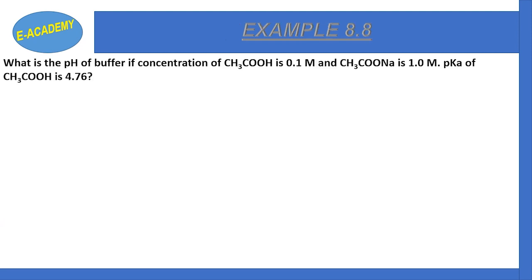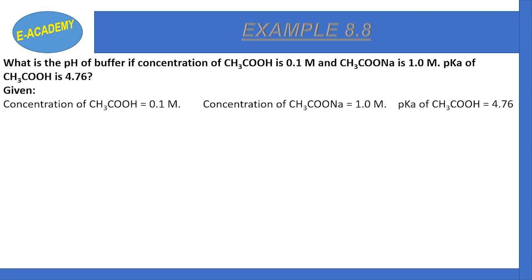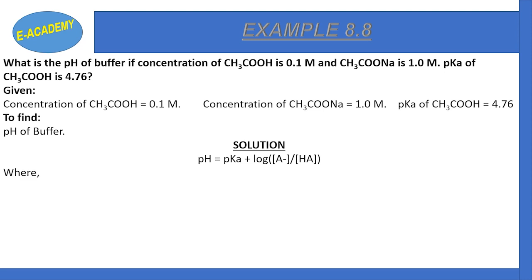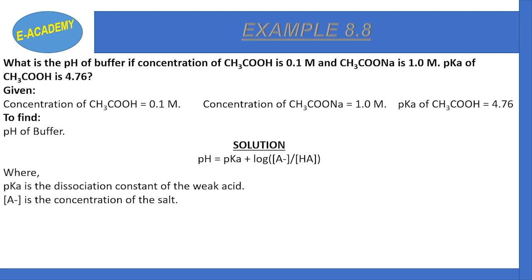Example 8.8: What is the pH of a buffer if the concentration of CH₃COO⁻ is 0.1 molar and CH₃COOH is 1.0 molar? pKa of CH₃COOH is 4.76. Using the Henderson-Hasselbalch equation: pH = pKa + log([A⁻]/[HA]), where pKa is the dissociation constant of the weak acid, A⁻ is the concentration of the salt, and HA is the concentration of the weak acid.